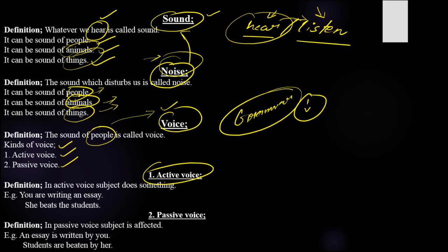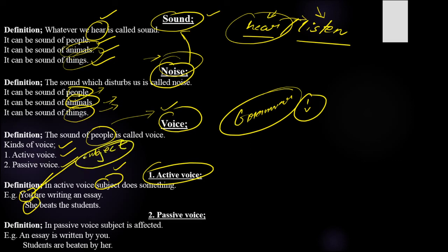In active voice, the subject does something — the subject is the doer of an action. For example, 'You are writing an essay' — 'you' is the doer of the action. Another example: 'She beats the students' — here 'she' is the doer of the action. So in active voice, your subject does something. That is known as active voice.